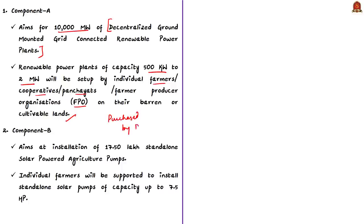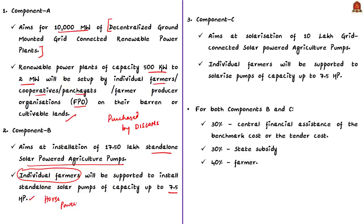Component B of the scheme aims at installation of 17,50,000 stand-alone solar-powered agriculture pumps. Under this component, individual farmers will be supported to install stand-alone solar pumps of capacity up to 7.5 horsepower. Component C aims at solarization of 10,000,000 grid-connected solar-powered agriculture pumps. Under this component, individual farmers will be supported to solarize pumps of capacity up to 7.5 horsepower, and the excess available energy could be sold to DISCOM companies.